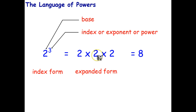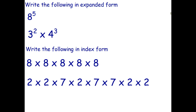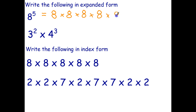So write the following in expanded form. The first one is pretty easy — it just tells us we're multiplying five eights together, so that's eight times eight times eight times eight times eight. If we have 3 squared times 4 cubed — sometimes we say four cubed, or we can just say four to the power of three — that expands out to show the individual factors.